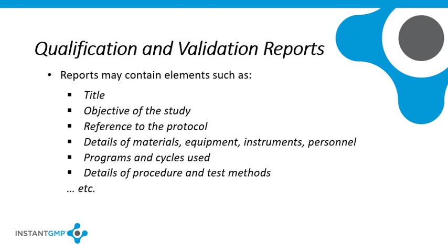The report should include details of procedures and test methods together with a comparison of the results with the acceptance criteria. In addition, it should include recommendations on the limits and criteria to be applied to all future production batches. It is common practice in many companies for the protocol and report to be combined into a single set of documents. The protocol is approved as a form on which the test results are recorded as they become available. This reduces the amount of paperwork that needs to be stored and makes an overall assessment of the validation results easier to carry out.